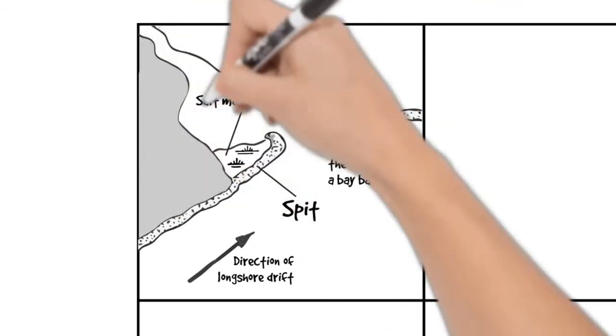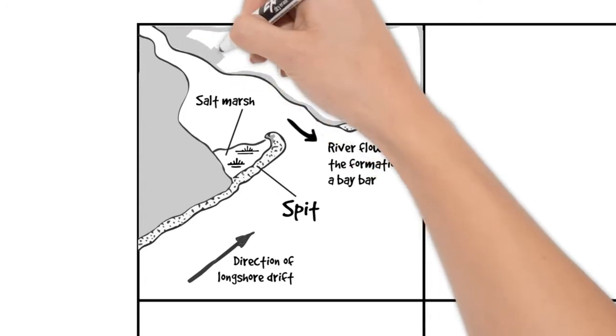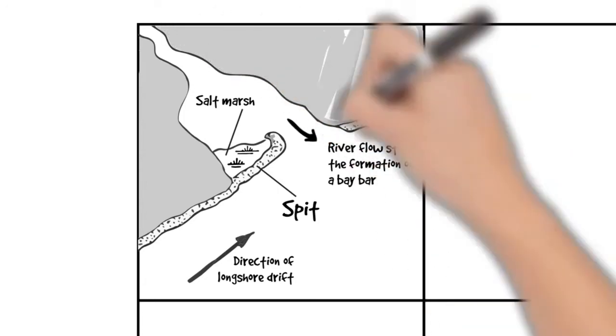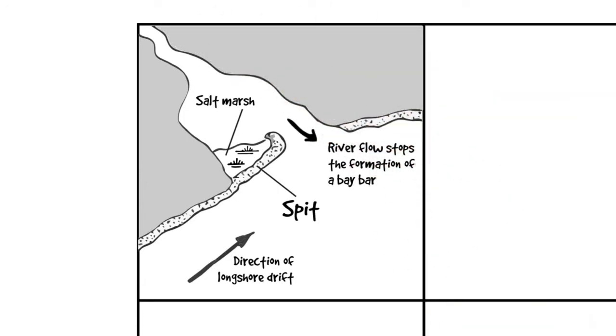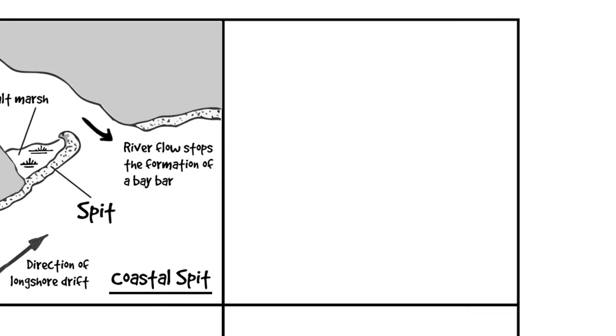Just to make it really clear, let's shade in the land to distinguish from the sea. If you're using colours, I suggest green would be a good idea here. That's our coastal spit.